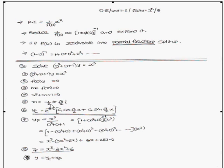Solving, m = −1/2 ± (√3/2)i. Therefore the complementary function is e^(−x/2) [c₁ cos(√3/2 · x) + c₂ sin(√3/2 · x)].